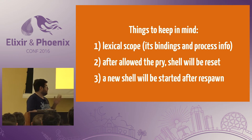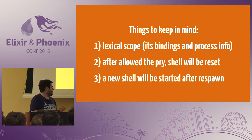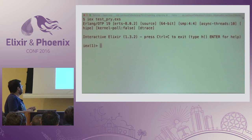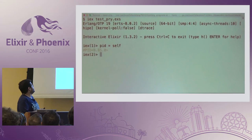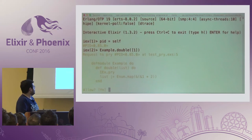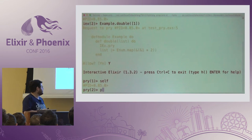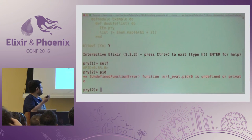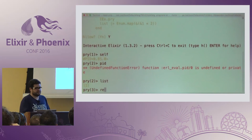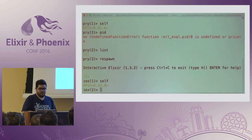When you start the pry the shell will be reset, so you don't have access to the variables that you bound before. And when you finish the pry, after respawn a new shell will be started. So let's see this in action. I start my example here — we have a PID for this process. When I call our function we receive a message to allow pry. This process will be the same PID, but we don't have access to the variables created before. We do have access to the list information, and after we finish the pry — after respawn — we create a new process with a different PID. So it's a powerful tool.